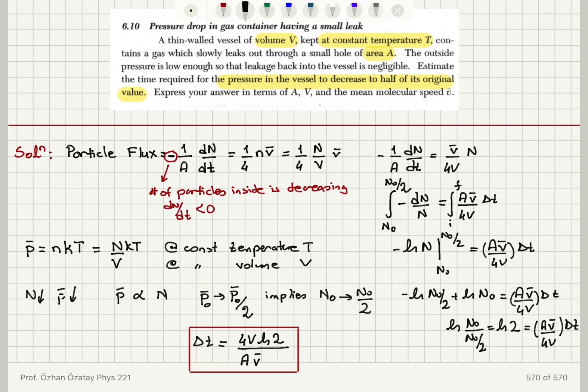Using this equation and integrating from initial time to final time, I find that delta t is 4V natural logarithm of 2 divided by A V-bar.